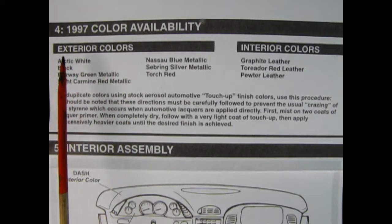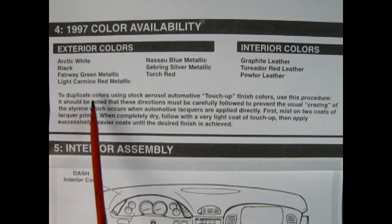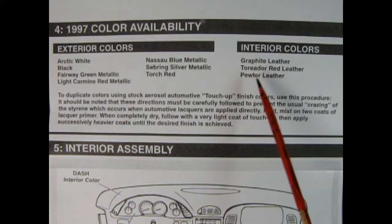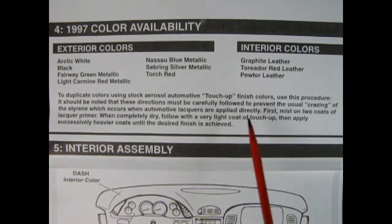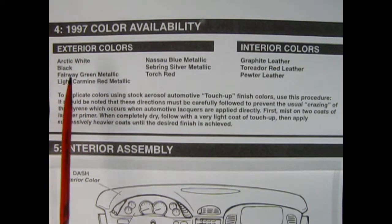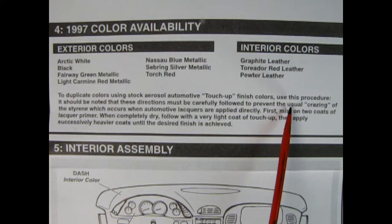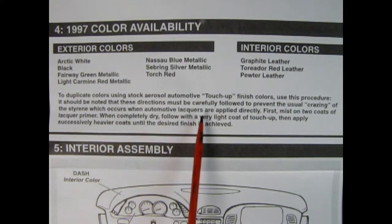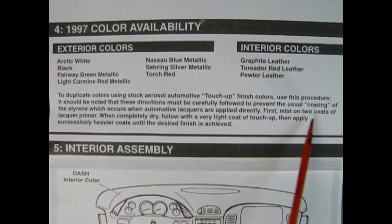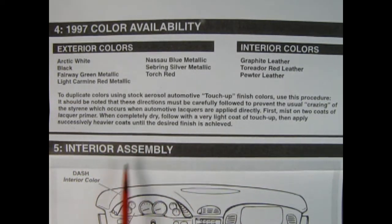The fourth step is our 1997 color availability chart. You have arctic white, black, fairway green metallic, light carmine red metallic, Nassau blue metallic, Sebring silver metallic, and torch red. For the interior there was graphite leather, teredo red leather, and pewter leather. You could actually make the original 1953 type car which came out in arctic white with teredo red leather. To duplicate colors using stock aerosol automotive touch-up finish colors: first, mist on two coats of lacquer primer. When completely dry, follow with a very light coat of touch-up. Then apply successively heavier coats until the desired finish is achieved.